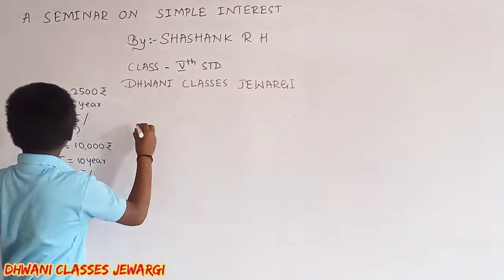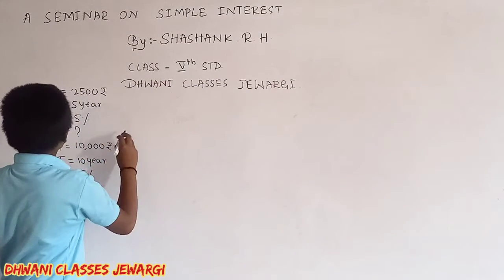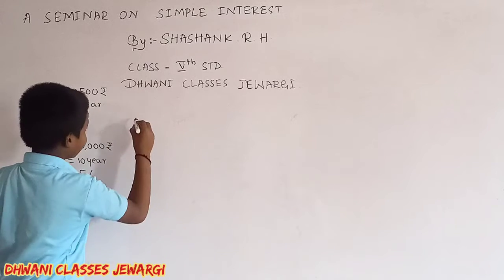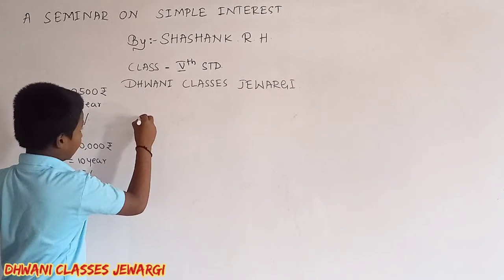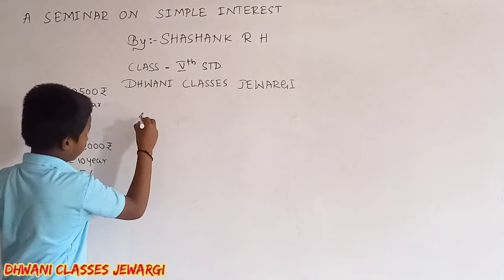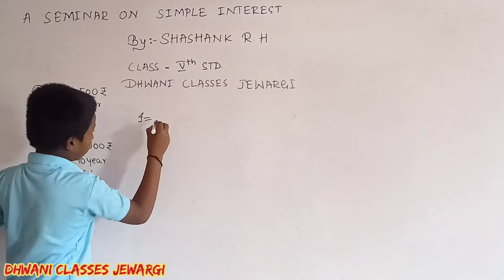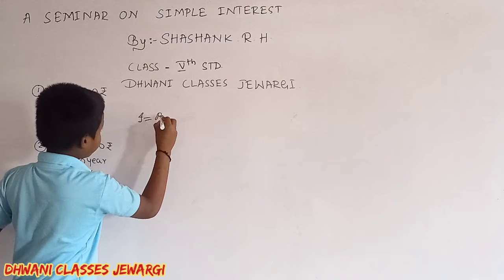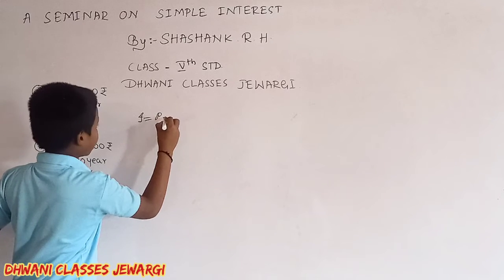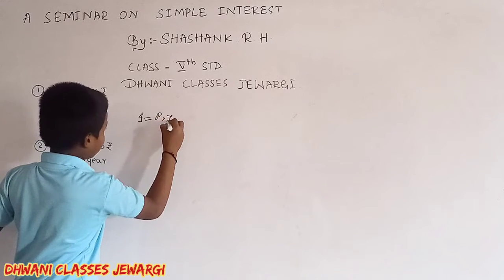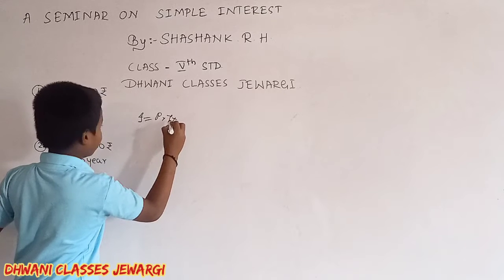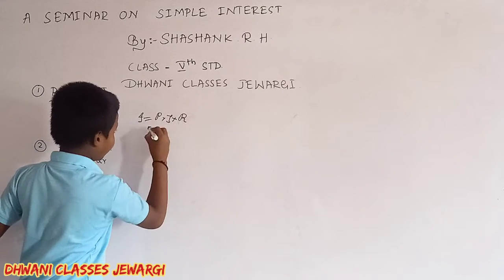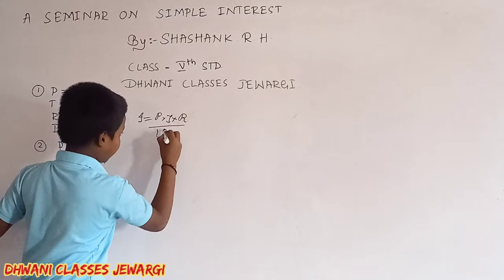The first question formula: I is equal to P into T into R divided by 100.